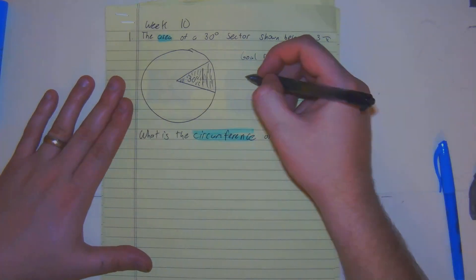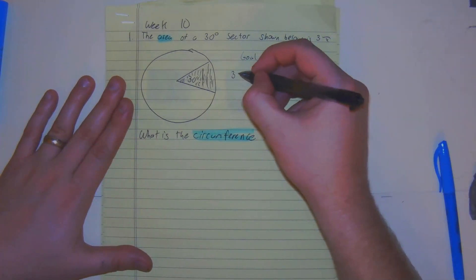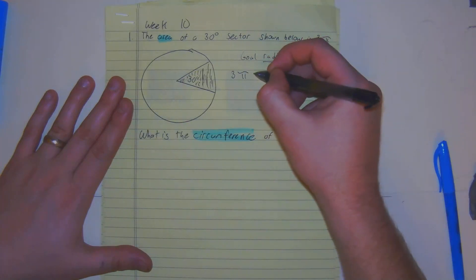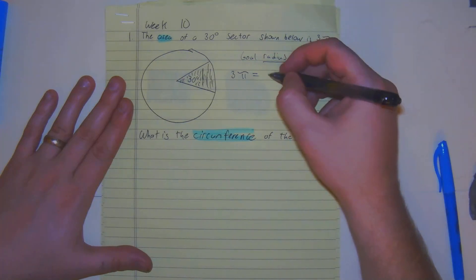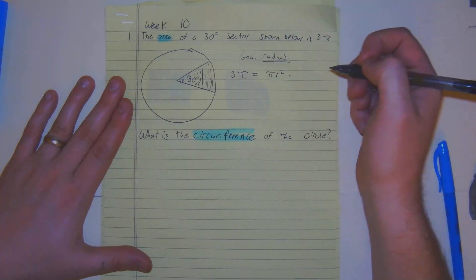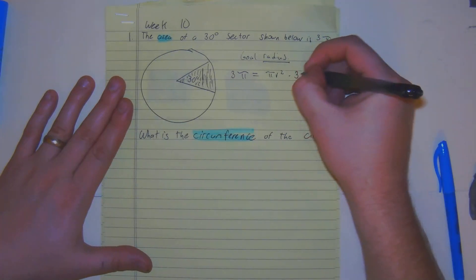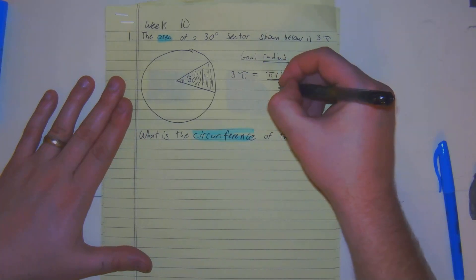What we have here is 3 pi is equal to pi r squared times 30 degrees all over 360.